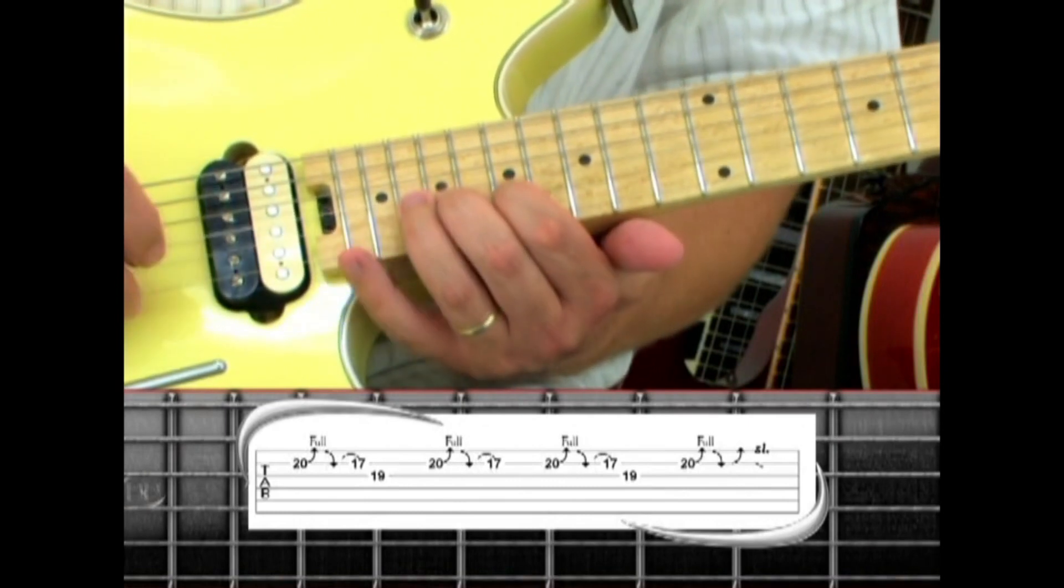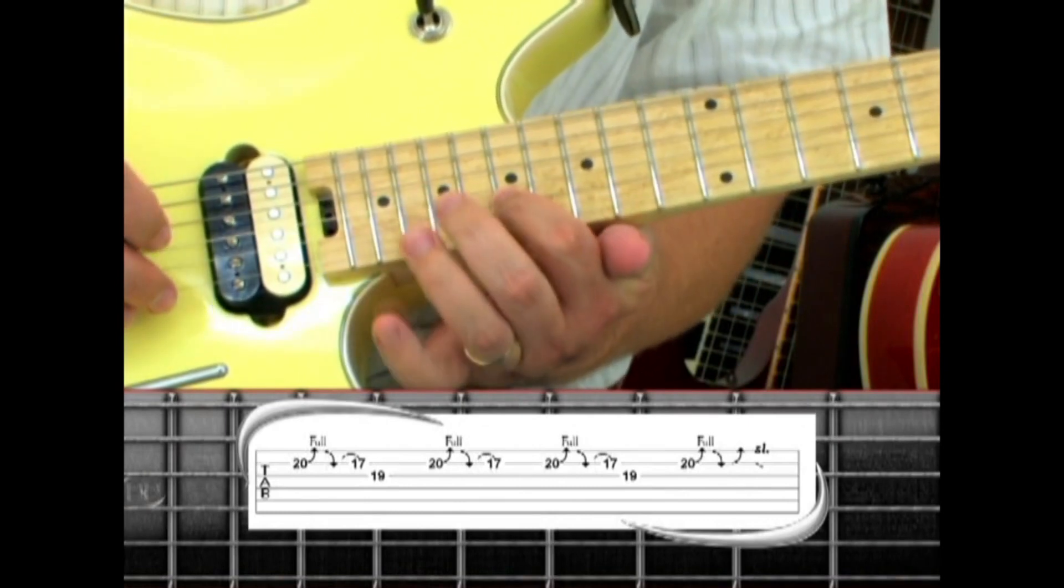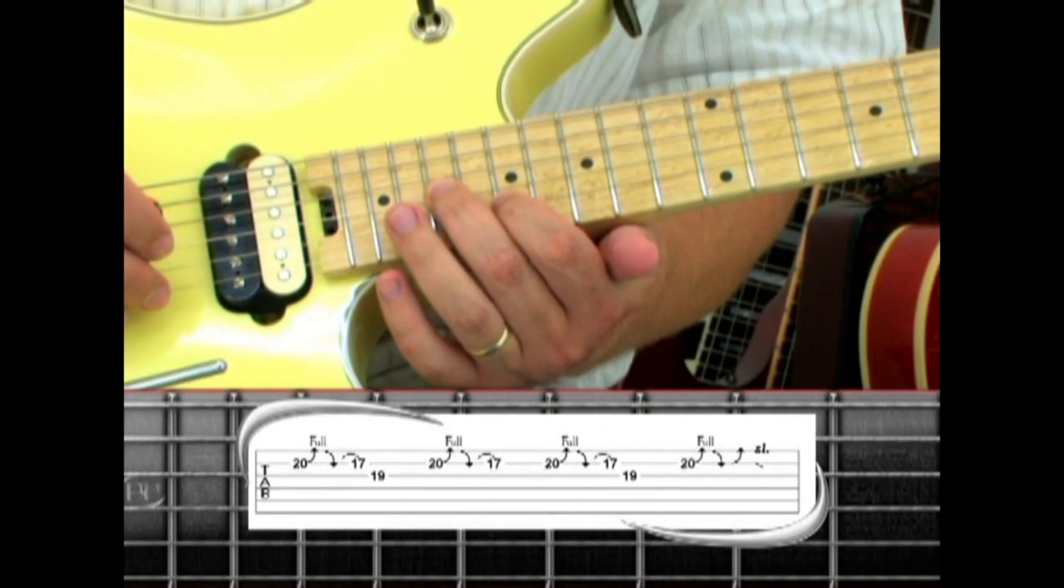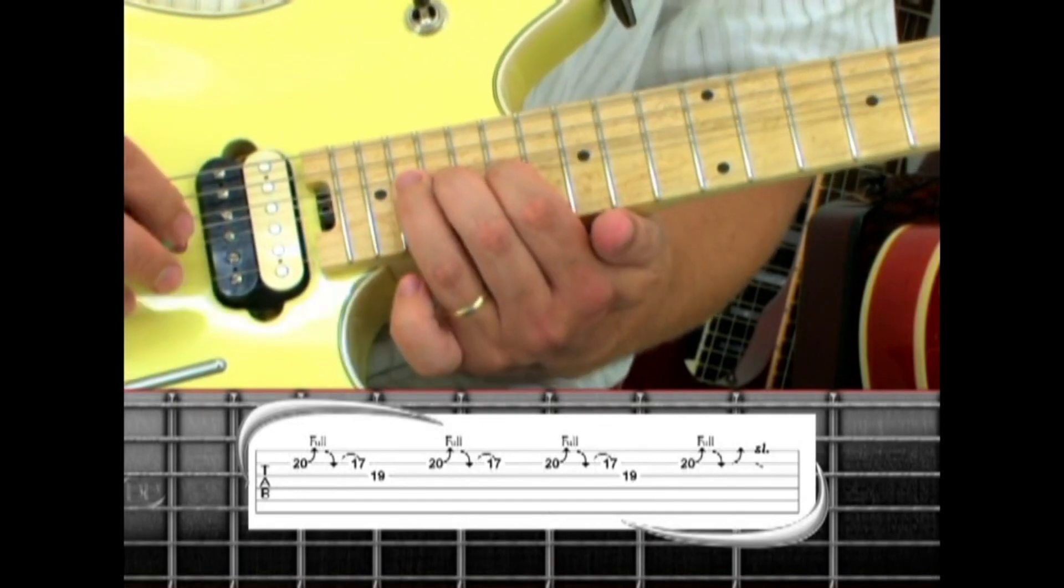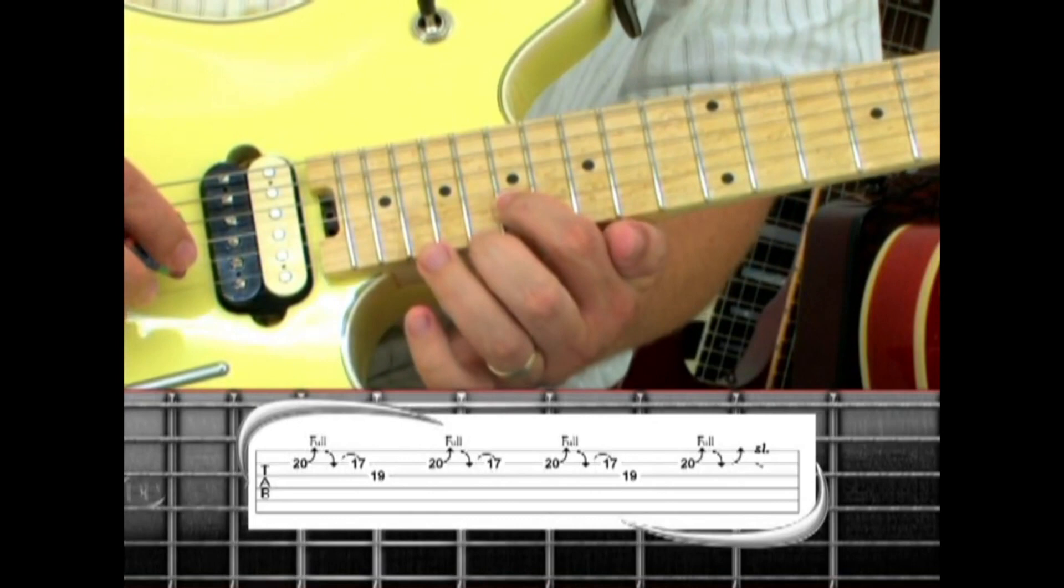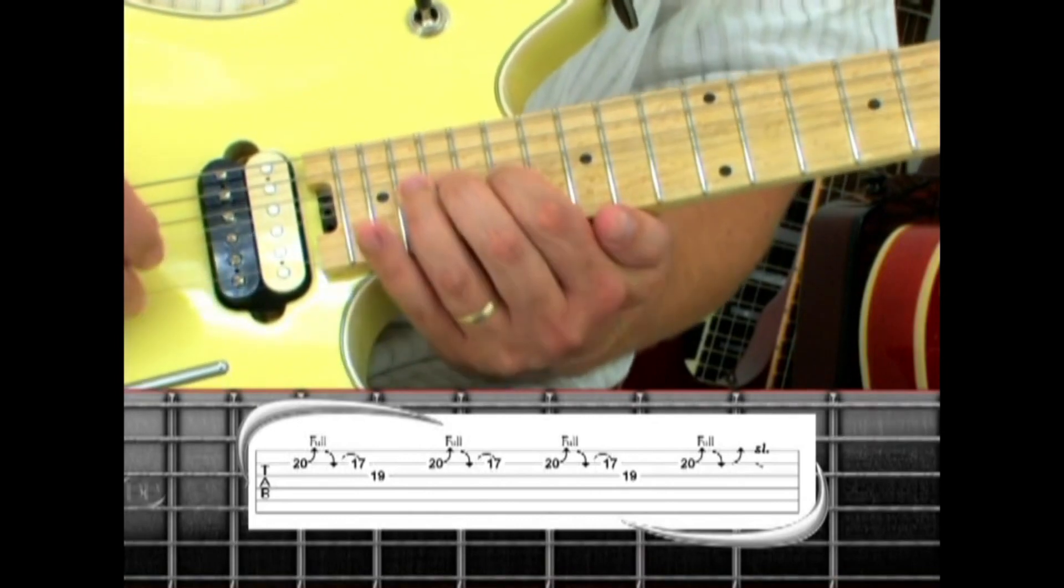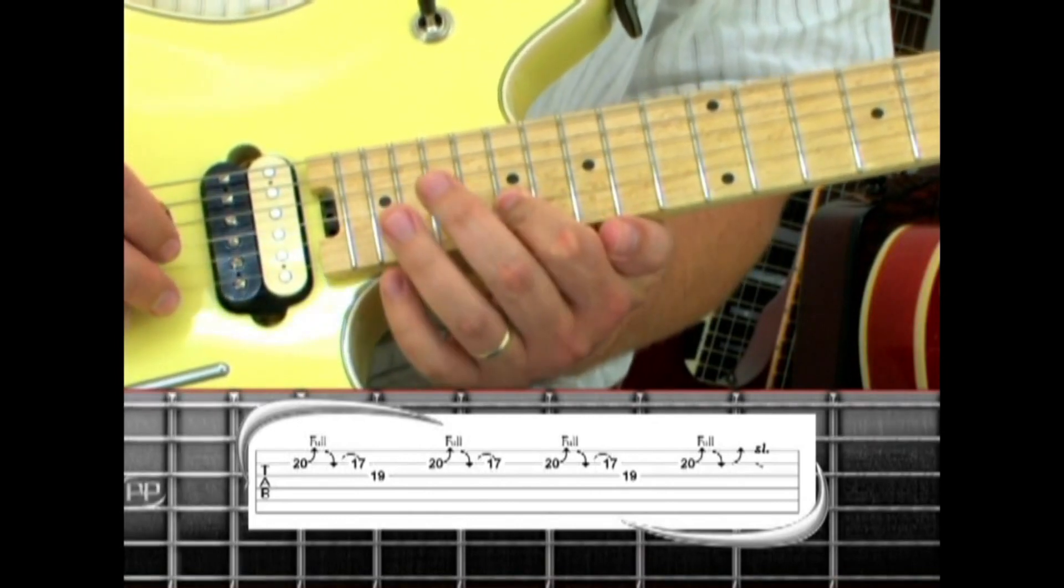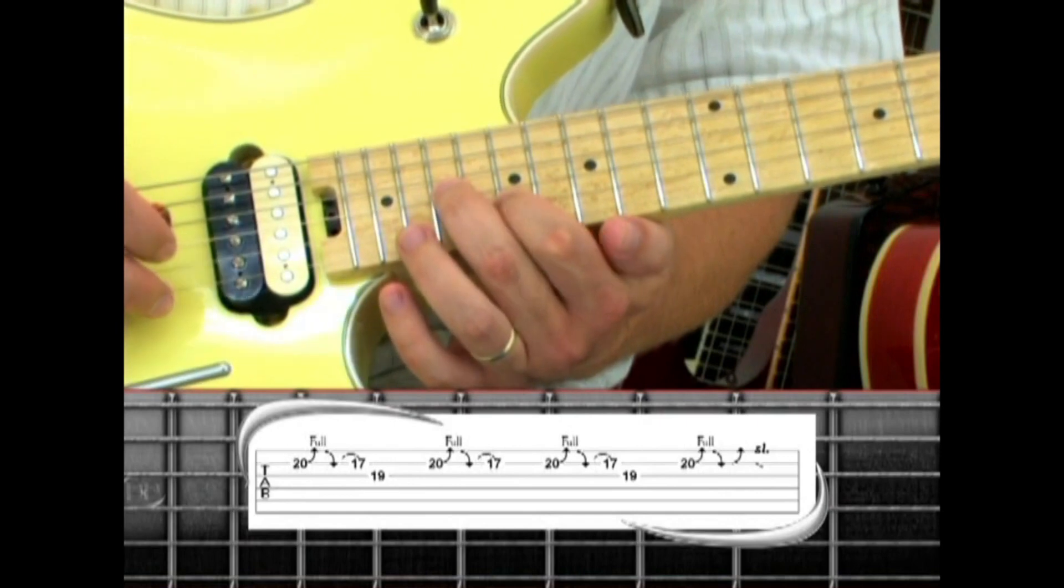Second string 17, back to second string 20, release and pull to 17. Third string 19, back to second string 20, bend and release, pull to 17. Second string 20, release and pull to 17, to third string 19, back to second string 20.